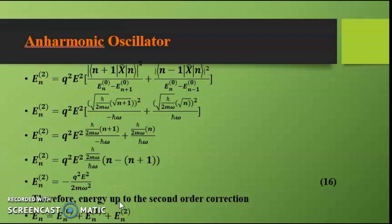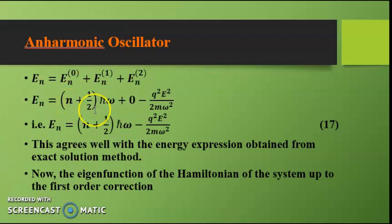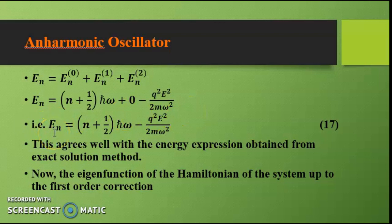Therefore, the energy up to second-order correction is En = En⁰ + En¹ + En² = (n + ½)ℏω + 0 − q²E²/(2mω²). So the final energy expression is En = (n + ½)ℏω − q²E²/(2mω²), and this result agrees well with the energy expression obtained from the exact solution method.